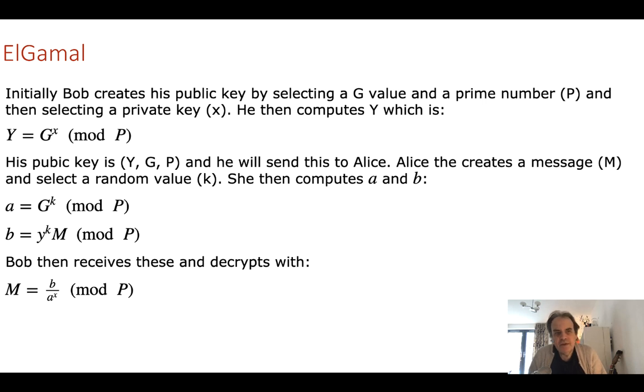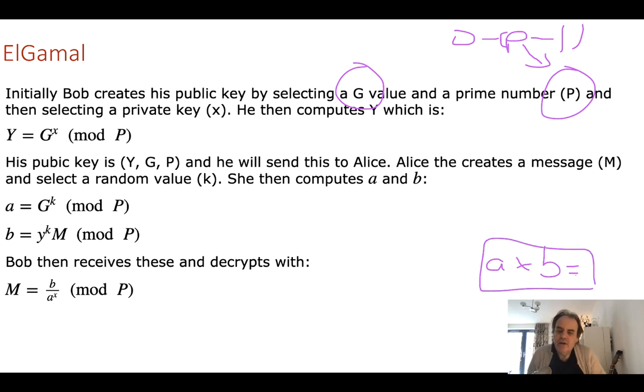So what we have with our ElGamal method is that we start off with two values: a G value, a generator value, and a P value, a prime number. So we define what's called a finite field. The values that we have are between zero and P minus one. So the operations that we have are all done mod P. And the good thing with finite fields is that we can still perform our normal mathematical operations within the finite field and they'll still work. So A times B is the same as A mod P times B mod P and so on.